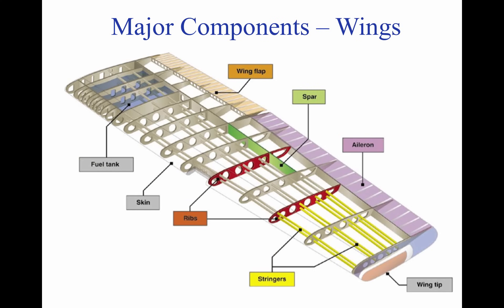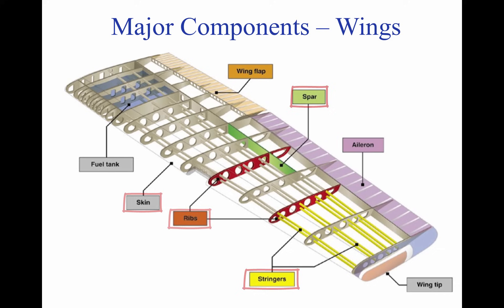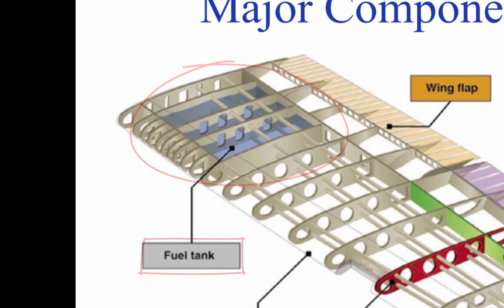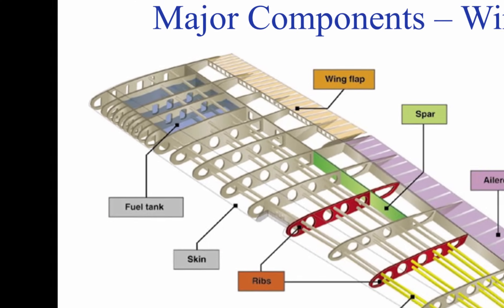The picture above shows the general construction of a modern wing. The ribs, stringers, spar, and skin all give the wing structure. The fuel tanks in most modern airplanes are also contained in the wing, near the fuselage, as part of the wing, or in flexible containers.